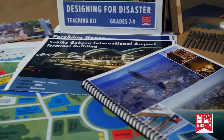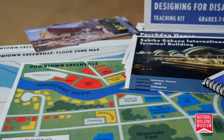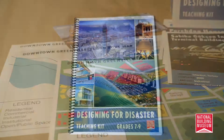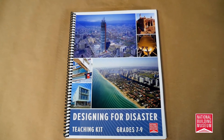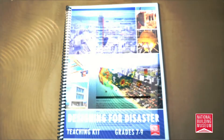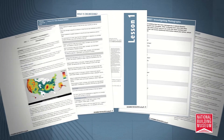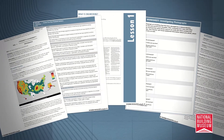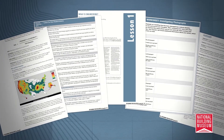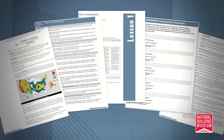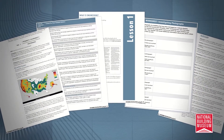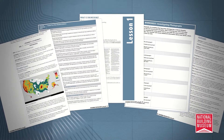First, let's take a look at the materials included in the box. Here is the curriculum booklet. Inside are lesson plans, standards of learning, student worksheets, a teacher resource section, and a lot more. We'll cover some of the specific activities listed inside over the next few minutes.